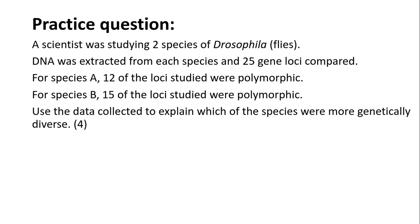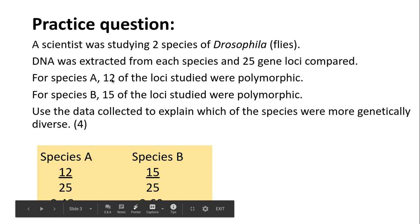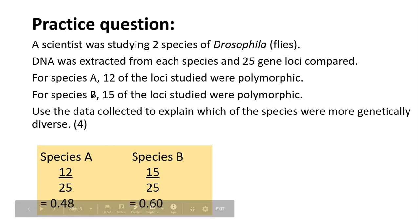In this simple example, we have two different species of Drosophila and we've looked at 25 gene loci. For species A there were 12 polymorphic loci, and for species B there were 15. For species A, we do 12 over 25, and for species B it would be 15 over 25.